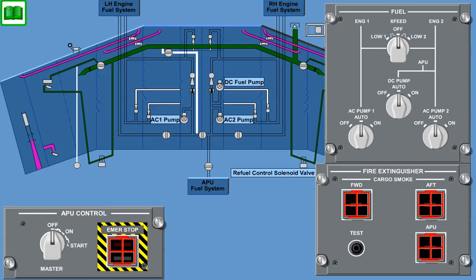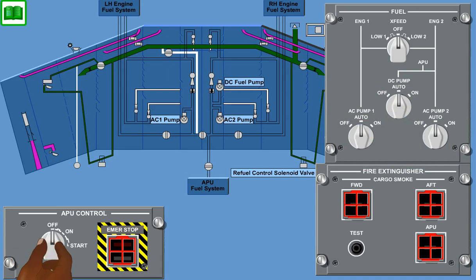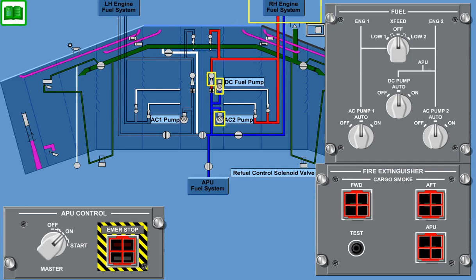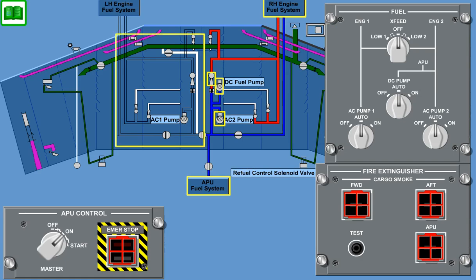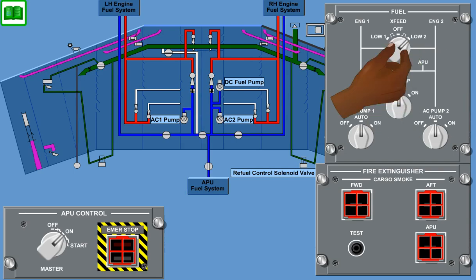For APU start, the DC and AC pump switches have to be in auto position. If you select APU start, the DC pump will start to supply pressurized fuel. As soon as AC power is available, the AC pump will take over. When the engine is running and the engine feed system is operating, fuel will be supplied from the ejector pump to the engine and the APU. If necessary, the APU can be supplied with fuel from the left-hand tank by moving the cross-feed switch to low 2 with AC power available, causing the left AC pump to supply pressurized fuel to the APU. If the left engine is operating, the left ejector pump will also supply fuel to the APU.